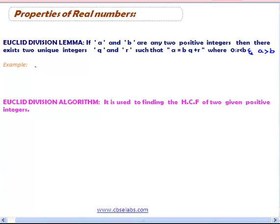Take an example. Consider two positive integers 5 and 3. Let a is equal to 5 and b is equal to 3. Here clearly we have a is greater than b.